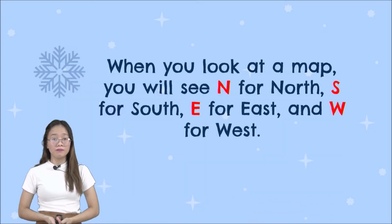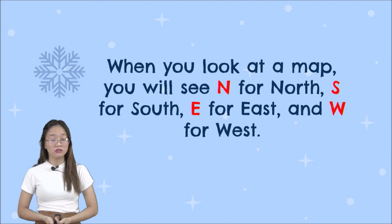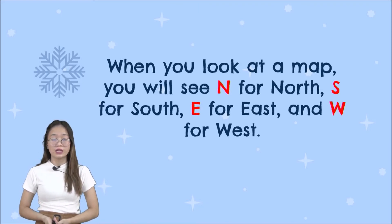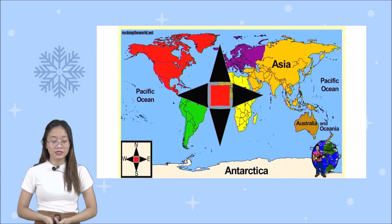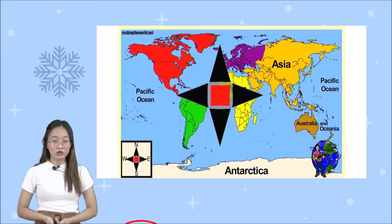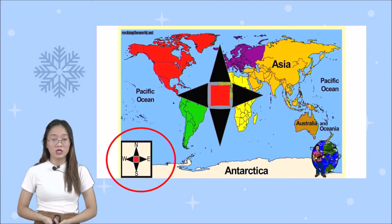When you look at the map, you will see capital N for north, capital S for south, capital E for east, and capital W for west. This is an example of the map. As you can see, we can see N, S, E, W — which means north, south, east, and west. The one that I encircled is the north, south, east, and west.